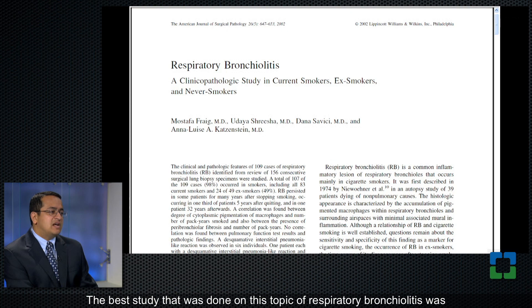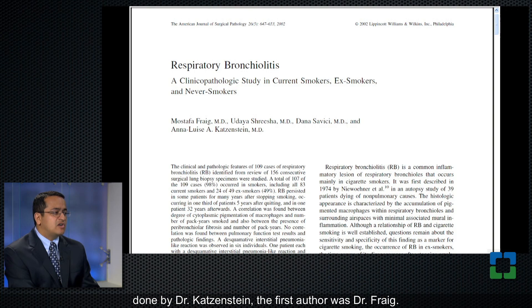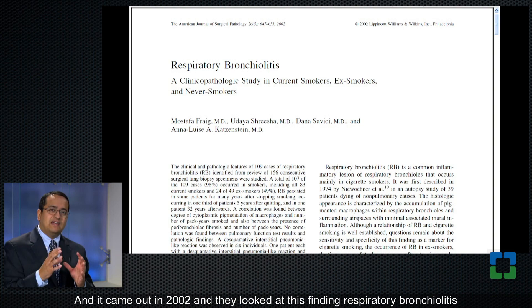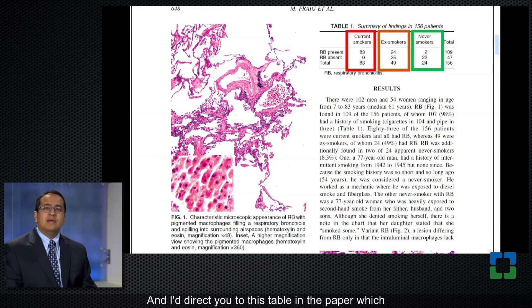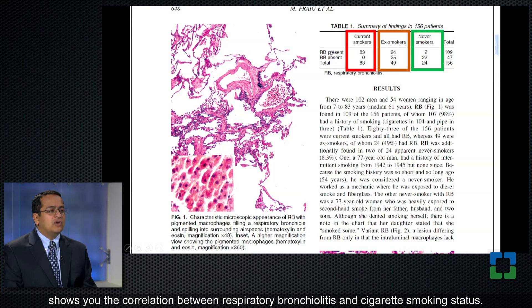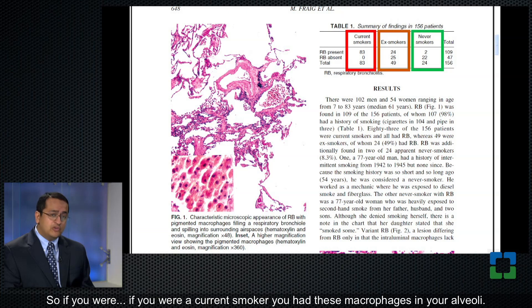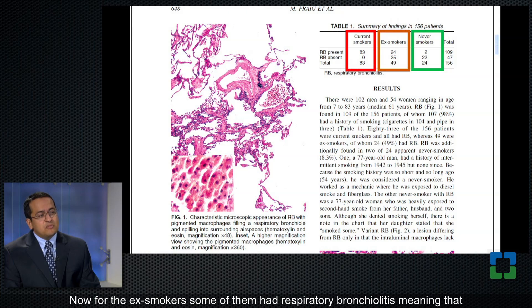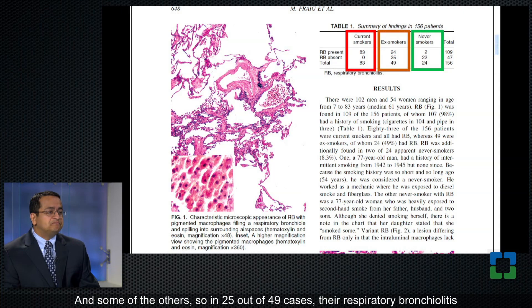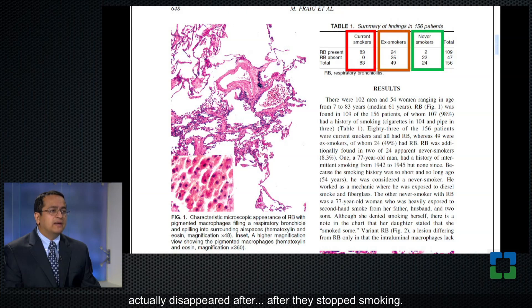The best study done on respiratory bronchiolitis was done by Dr. Kadzenstein; the first author was Dr. Frigg, and it came out in 2002. They looked at respiratory bronchiolitis and tried to correlate it with cigarette smoking history. The table in the paper shows the correlation between respiratory bronchiolitis and cigarette smoking status. Of the current smokers, all 83 had respiratory bronchiolitis in their lungs. For the ex-smokers, some still had it — the macrophages hadn't gone away even though they'd stopped smoking — while in 25 out of 49 cases the respiratory bronchiolitis had actually disappeared after they stopped smoking.